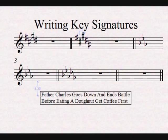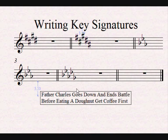An easy way to write key signatures is to remember two phrases. For sharps, the phrase is: Father Charles Goes Down And Ends Battle. Father starts with F, Charles with C, then G, D, A, E, and B. So if we need a key with one sharp, we apply a sharp to the F. With two sharps, we use F first and then C.